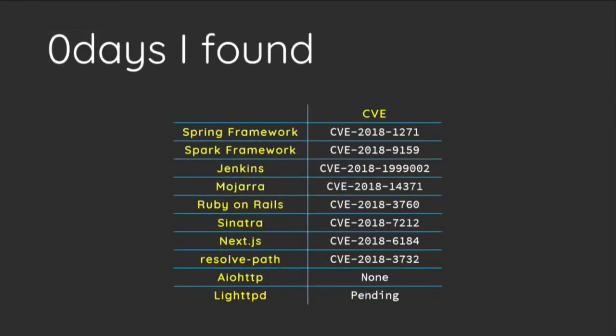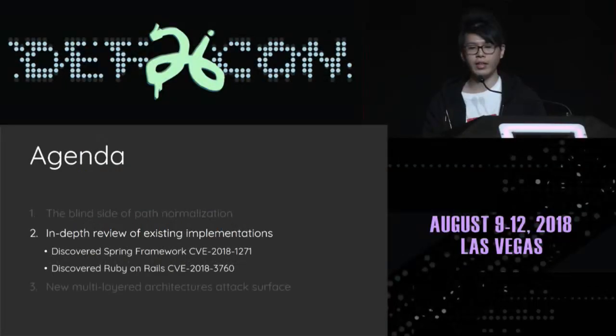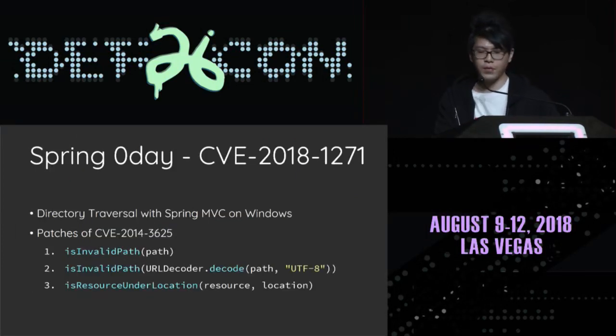For the past several months, I started to review path normalization and parser logic in web applications. Of course, we found several problems in diverse implementations, and here is the list. The next section is an in-depth review of existing implementations. Due to time considerations, and because our new finding is more important, we will only show you two cases. The first one: directory traversal on Spring Framework.